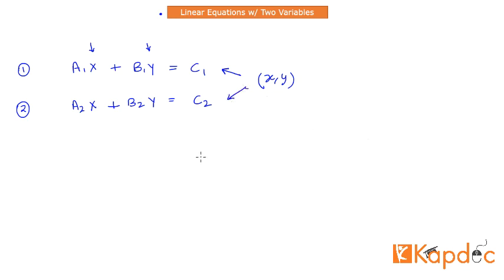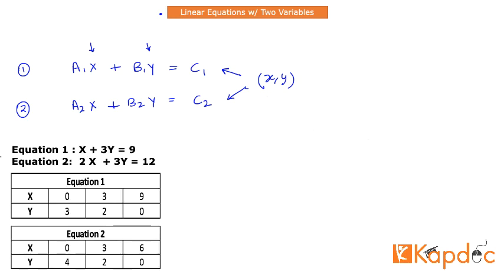So let's take a look at one real example of a pair of linear equations. I have two equations here: Equation 1 is x plus 3y is equal to 9, and Equation 2 is 2x plus 3y is equal to 12. There are different constants for both of these equations, but the variables are the same. The table shows that for Equation 1, I can find different pairs — combinations of x and y — that will satisfy it. So (0, 3) is one such pair, (3, 2) is one such pair, and (9, 0) is one such pair.